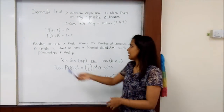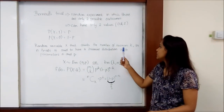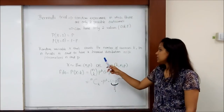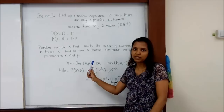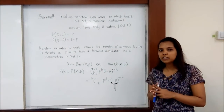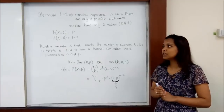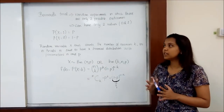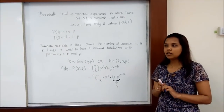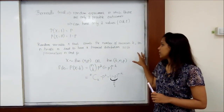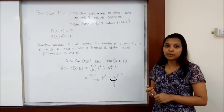For the binomial distribution, the random variable x counts the number of successes k in n trials, and is said to have a binomial distribution with parameters n and p. There are conditions for a binomial distribution to occur: first there must be n trials where each trial has only two outcomes, and the probabilities do not affect each other, meaning the events are independent.